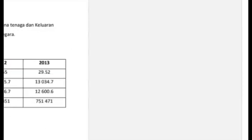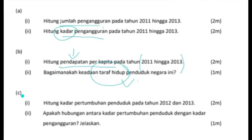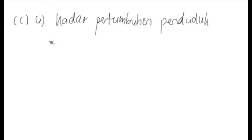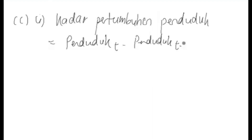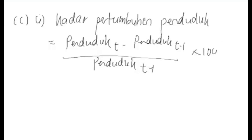Sekarang kita sambung dengan soalan C, satu roman: hitung kadar pertumbuhan penduduk bagi tahun 2012 dan 2013. Apakah rumus bagi kadar pertumbuhan penduduk? Jumlah penduduk semasa tolak jumlah penduduk sebelum, bahagi jumlah penduduk sebelum, darab 100 peratus. Apabila anda nampak berkaitan dengan kadar pertumbuhan itu, pastikan kita akan pakai maklumat bagi tahun semasa tolak sebelum, bahagi sebelum, darab dengan 100 peratus.